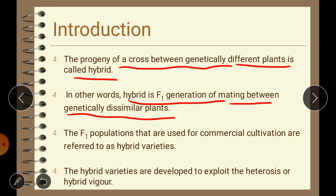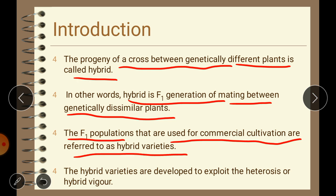Hybrid is the F1 or first generation obtained from crosses between genetically dissimilar plants. Such F1 populations that are used for commercial cultivation are referred to as hybrid varieties. Hybrid varieties are the first generation or F1 generation from crosses between two pure lines, two inbred lines, or two open-pollinated varieties, clones, or other populations that are genetically dissimilar. These hybrid varieties are developed to exploit heterosis or hybrid vigor.